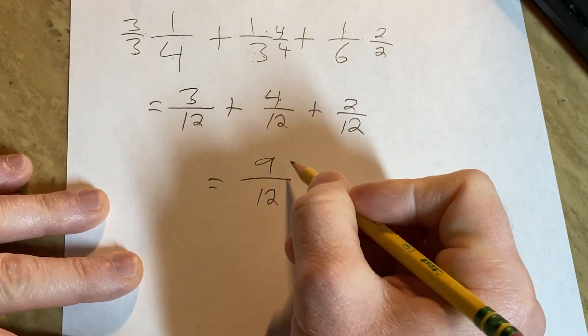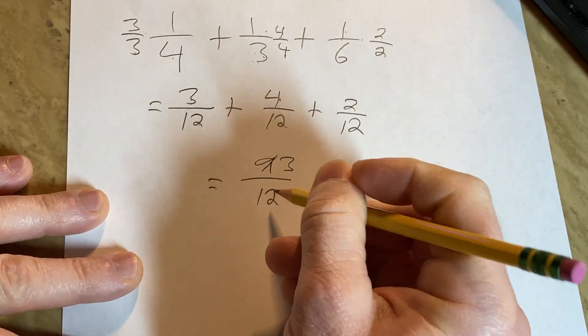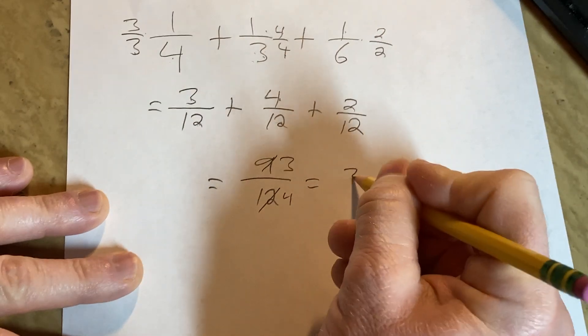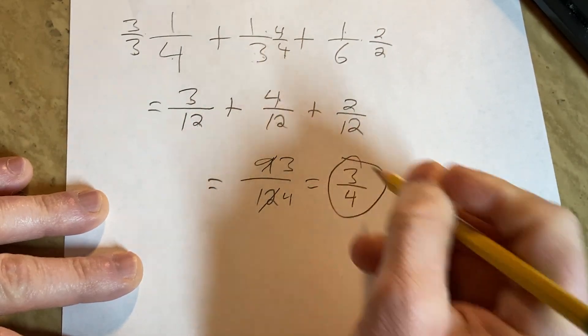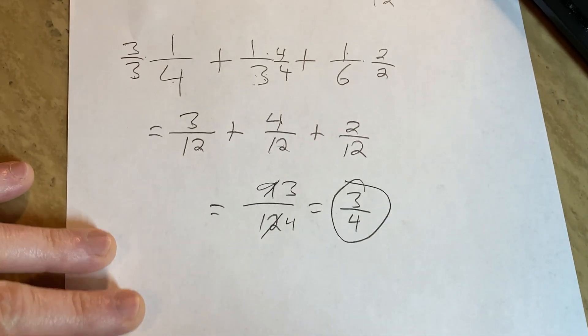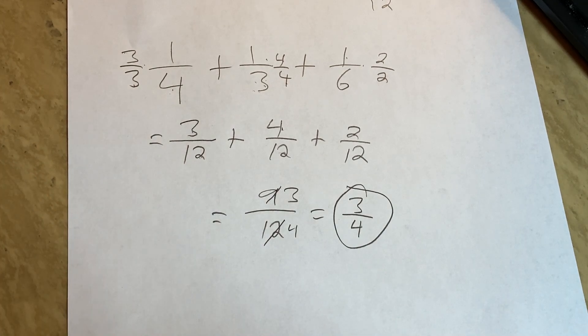3 goes into 9 three times and it goes into 12 four times. So you get 3 over 4, and that's the final answer. I hope this video has been helpful. Good luck.